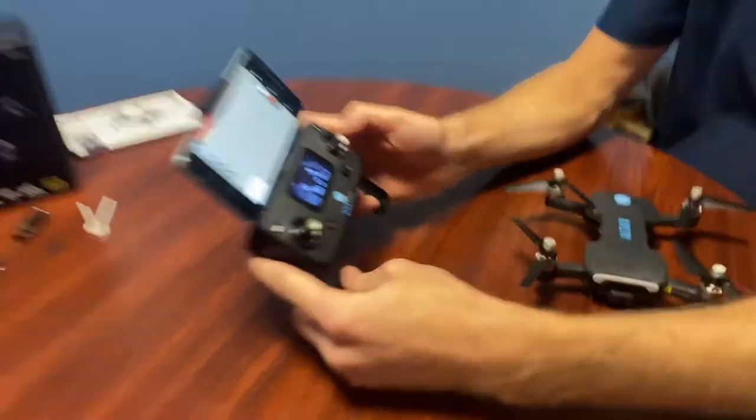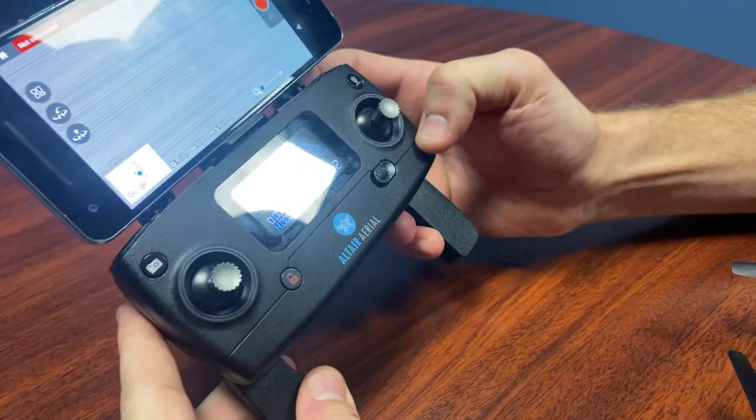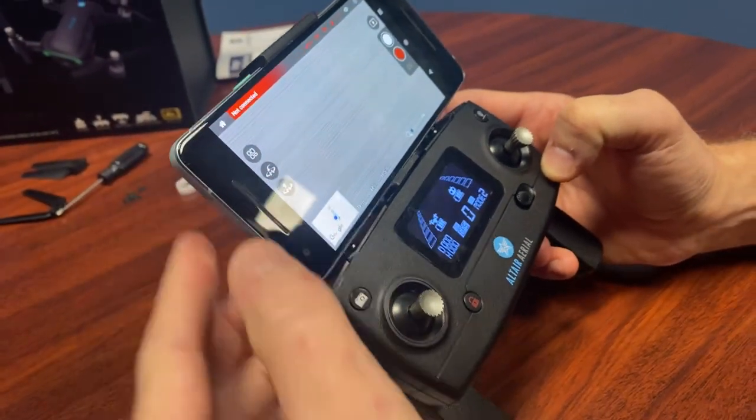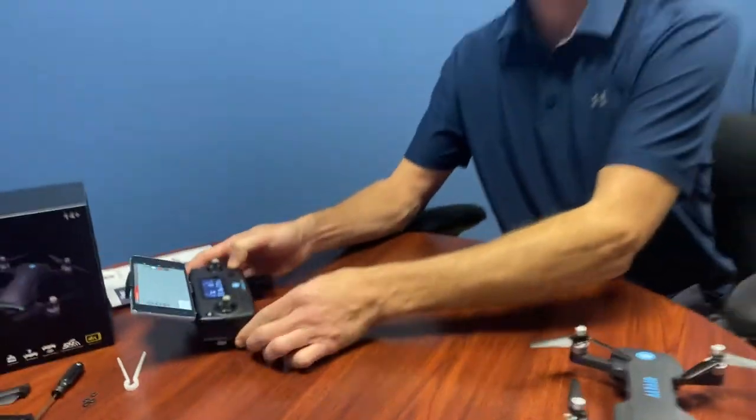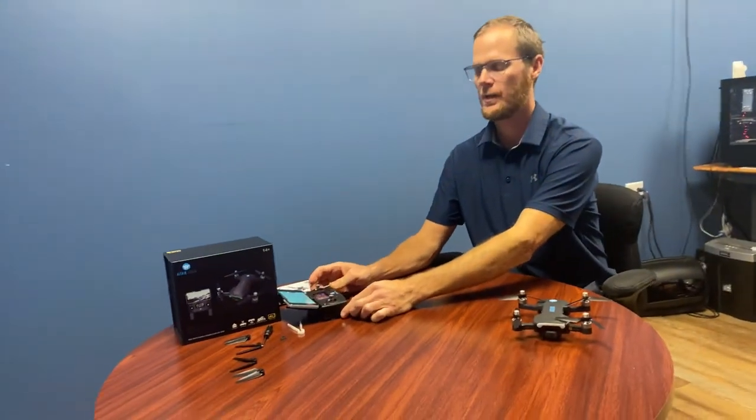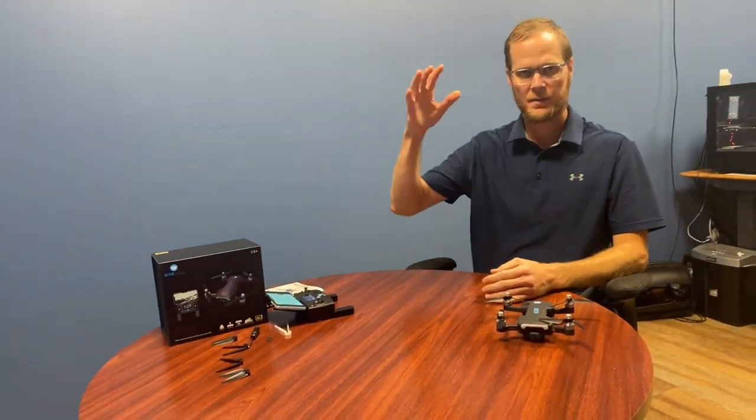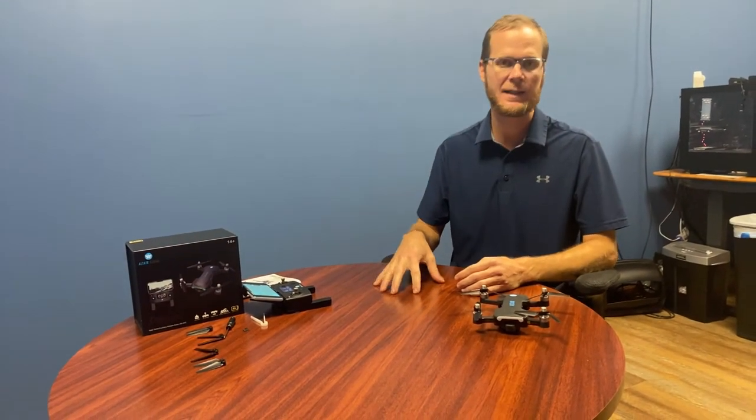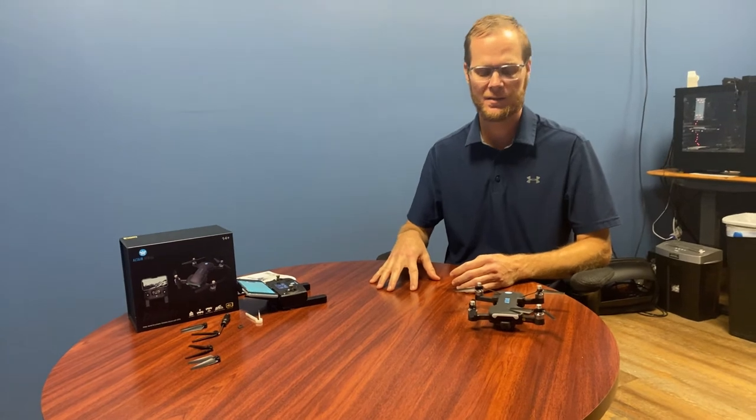The first way is by pressing the return home button on the controller, which is right up here, or the return home button, which is that center button on the left side of the app. Press that, the drone is then going to fly up in order to avoid any obstacles, and then it's going to return to your home position that you set when you turn the GPS on, and that sets automatically when the GPS is turned on.